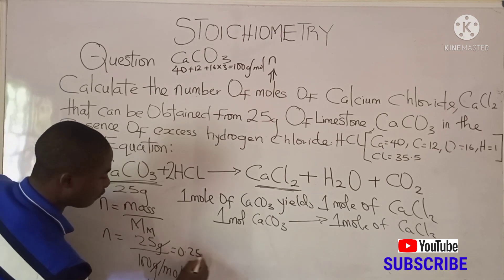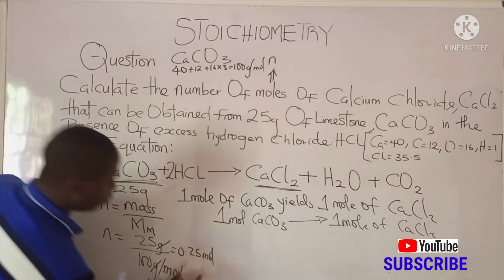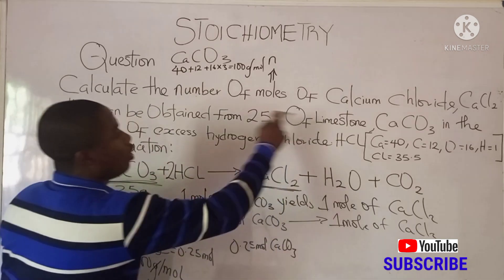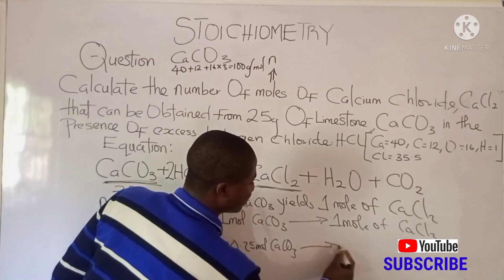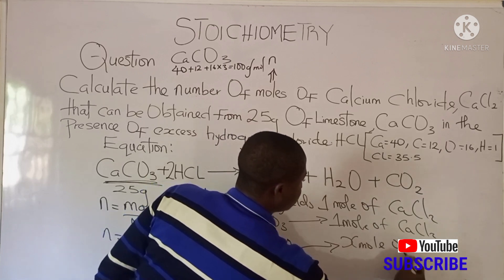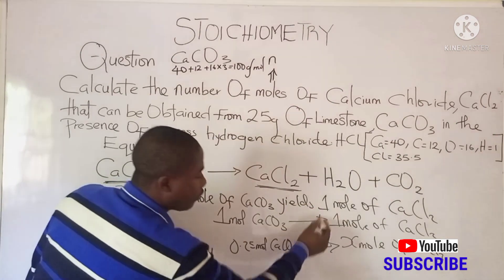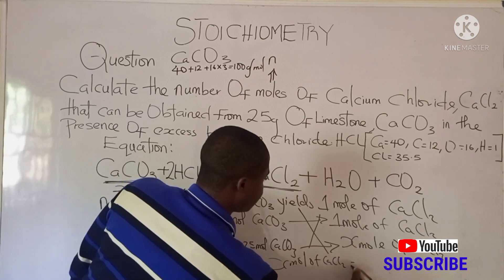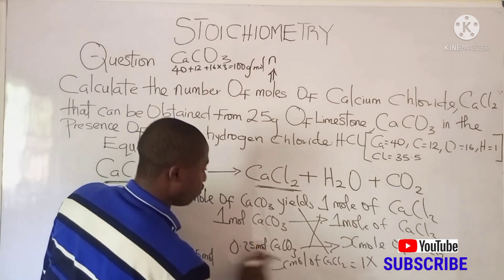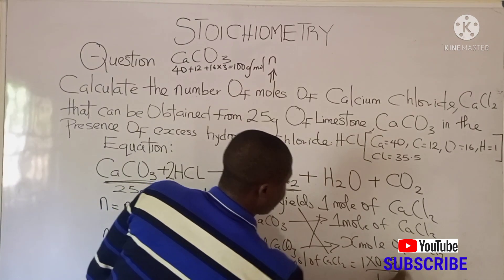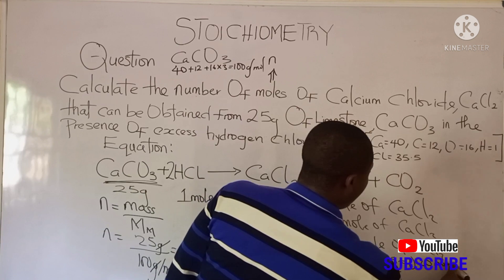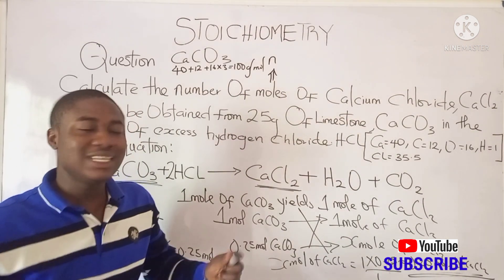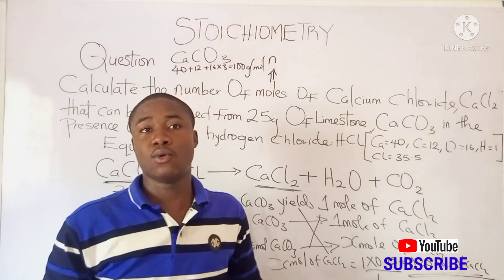Now we substitute: 0.25 moles of CaCO₃ will yield x moles of CaCl₂. Cross-multiplying: x = (1 × 0.25) / 1 = 0.25 moles of CaCl₂. So the answer is 0.25 moles of calcium chloride. This is how problems under stoichiometry are tackled.